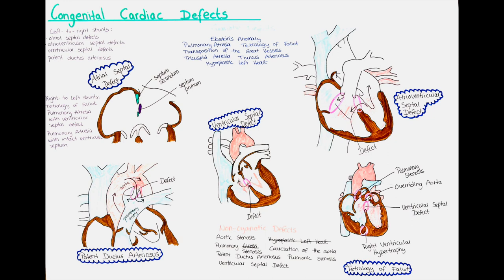Now we will talk about atrioventricular septal defects — holes between the atrium and ventricle where the valve is usually also malformed or does not work properly. These defects make up around 2–9% of congenital heart defects. The defect can be a primum atrial septal defect with a cleft mitral valve, or a defect of both the primum atrial septum and inlet ventricular septum with a common atrioventricular valve. Patients with only a little atrioventricular valve regurgitation and high pulmonary vascular resistance are often asymptomatic in childhood.